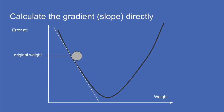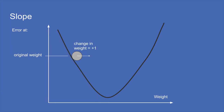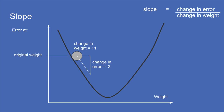Luckily there's an insight that lets us do this in a very reasonable time: if we're careful about how we design our neural network, we can calculate the slope directly — the gradient. We can figure out the direction to adjust each weight without going all the way back through and recalculating. The slope we're talking about is: when we make a change in weight, the error changes a little bit. That relationship — change in error divided by change in weight — is the slope, written as dE/dW.